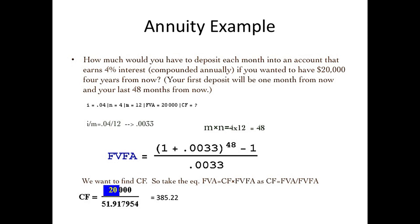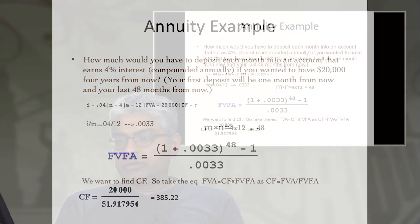Then you get the cash flow is the future value divided by the factor, which gives you $385.22 as your equal monthly payment. You have to make 48 of those starting a month from now in order to have $20,000 at the end of four years at the growth of interest that's given to you. So that is the answer to the problem.